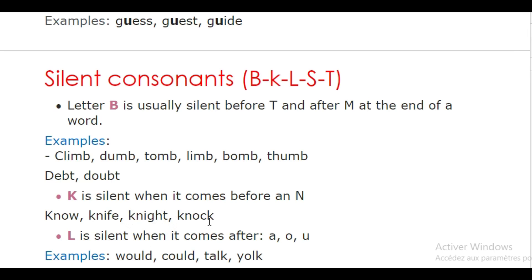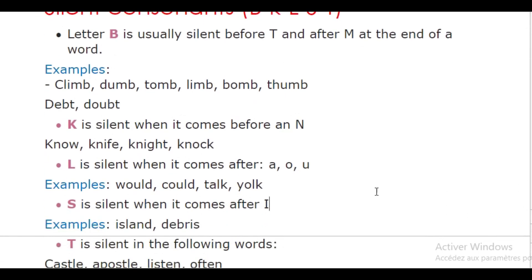Letter L now. L is silent when it comes after A, O, and U. Examples: would, could, talk, and yolk. Again: would, could, talk, and yolk. So not 'woulld', not 'coulld', not 'tallk', and not 'yollk'. The L is silent: would, could, talk, yolk.